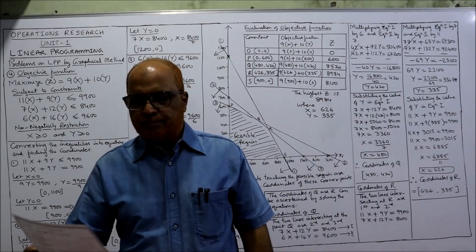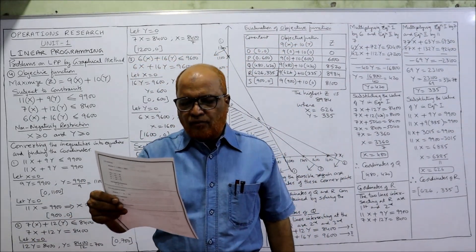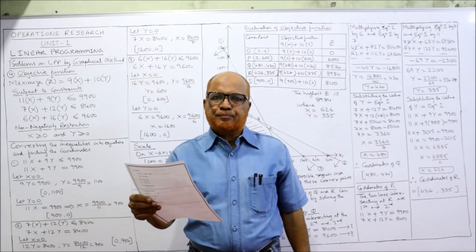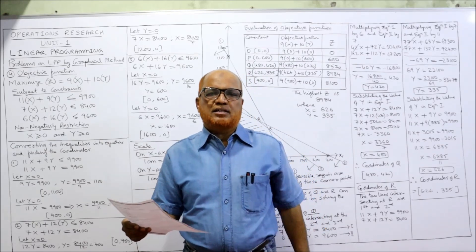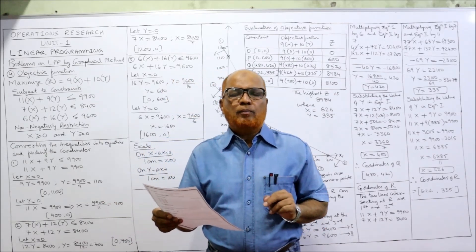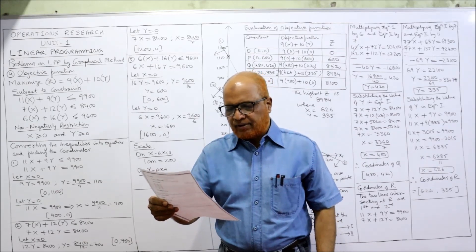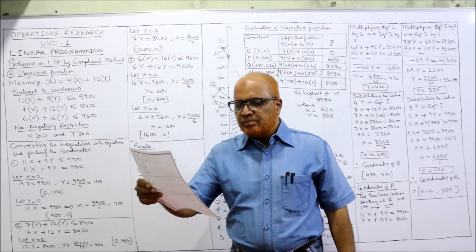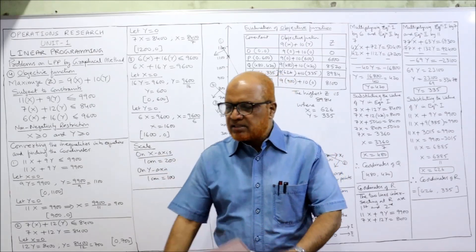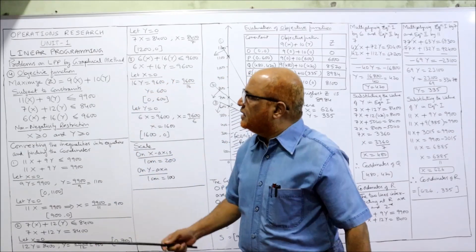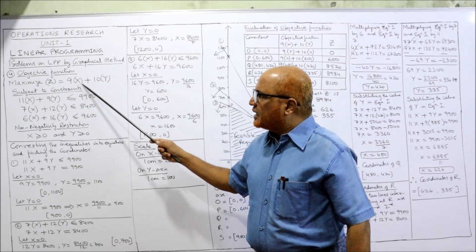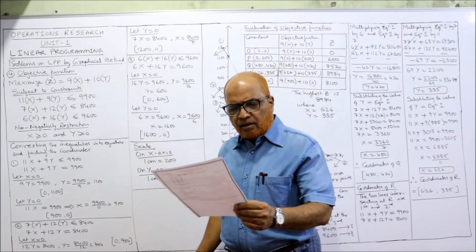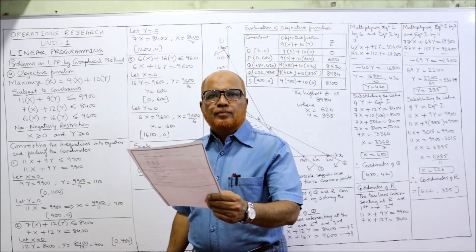Now see the fourth problem: solve the following using graphical method. The already-formulated problem is given — in the previous three problems we formulated, but here the formulated problem is given and we simply have to solve it by graphical method. Maximize Z is equal to 9x plus 10y. The decision variables are x and y.